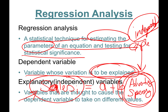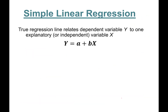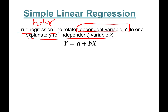The simple linear regression model in general can be written as: Y = A + BX, where we are looking for the true regression line. This relates the dependent variable Y to one explanatory variable X. Y is the variable whose variation we are trying to explain, and X is the independent or explanatory variable.